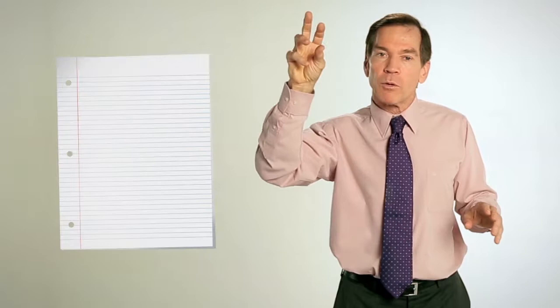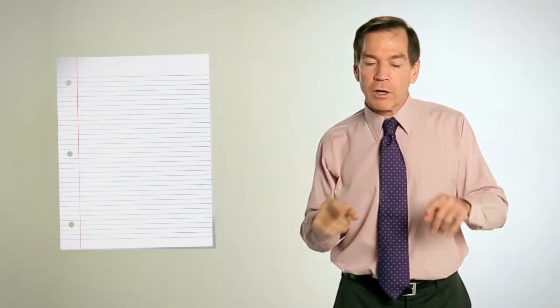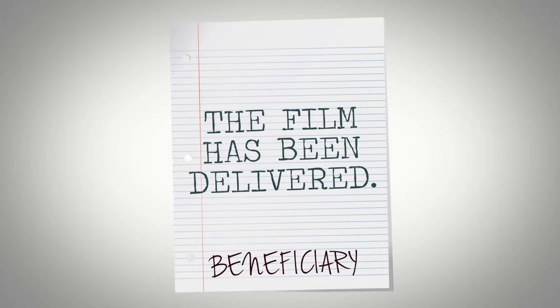Now, customer cares very much what those drawdown documents say. The customer will want protection that the documents actually do what they're supposed to do. For example, what if the document says, the film has been delivered, signed by the beneficiary, but in fact the film has not been delivered, right? So what does customer do?